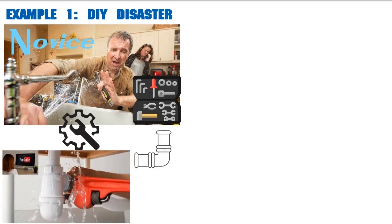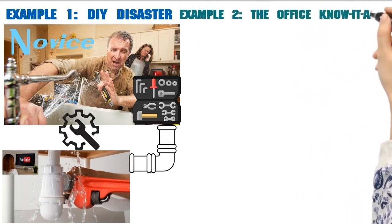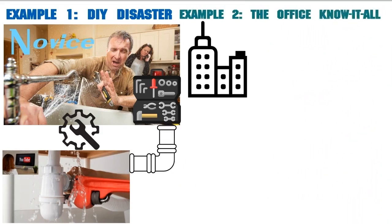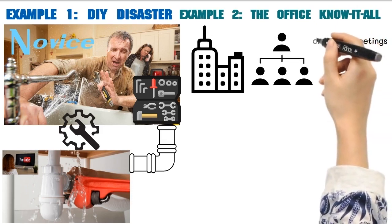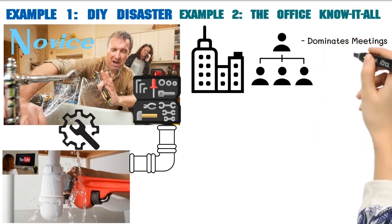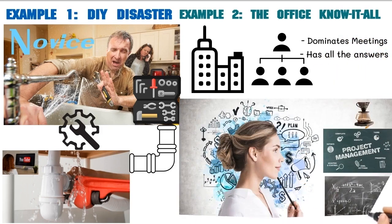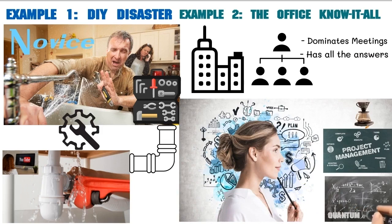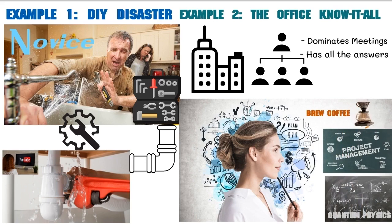Let's take another example. I'm going to call this the Office Know-It-All. I'm sure you've met this kind of a person. Now let's take a trip into the office. We all know that one person who confidently dominates every meeting, claiming to have all the answers. Meet Karen, the office know-it-all. Despite her lack of expertise, she confidently shares her thoughts on quantum physics, project management, and even how to properly brew coffee. She's usually wrong on all counts.